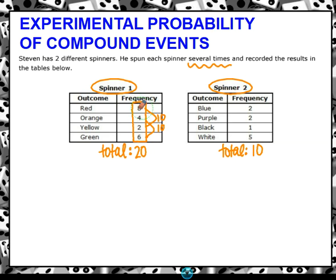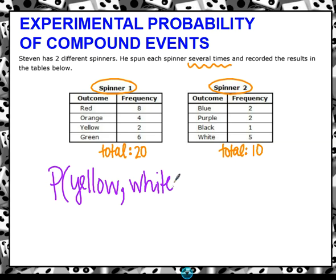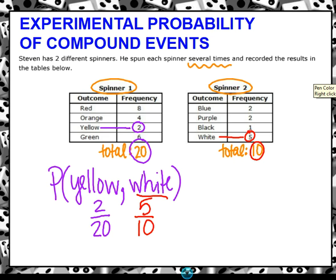That's probably going to change our probabilities. Let's find the probability of spinning a yellow on spinner one and then spinning white on spinner two. Two events means two fractions. On spinner one, yellow happened twice out of 20 times. And as we go to spinner two, white happened five times out of ten times. That's going to make our fraction different. But we're going with the experimental. Actually, what happened, how many times did they do each of these?